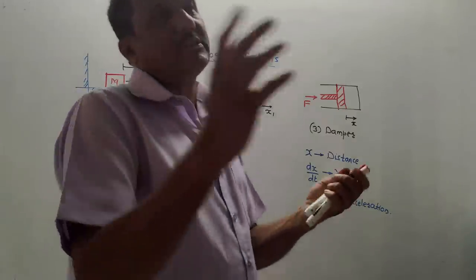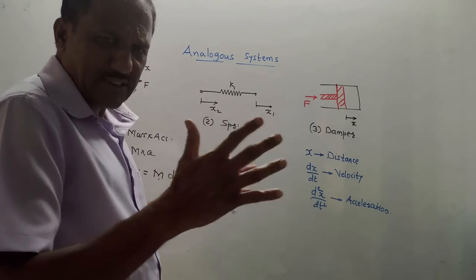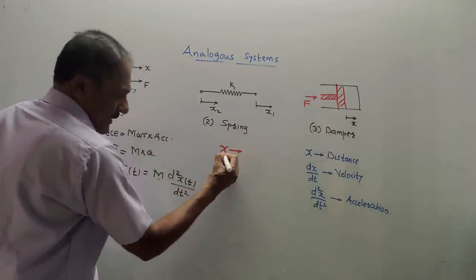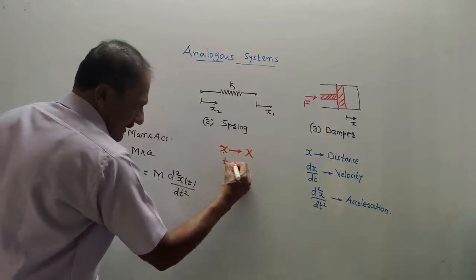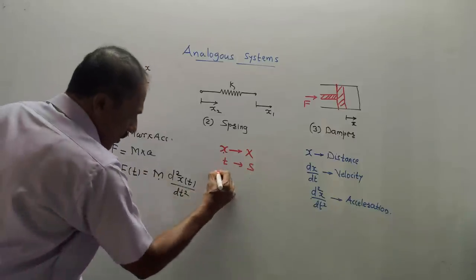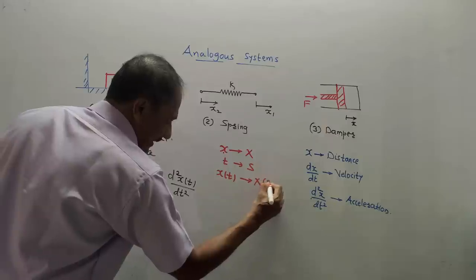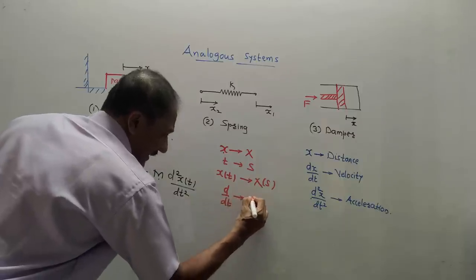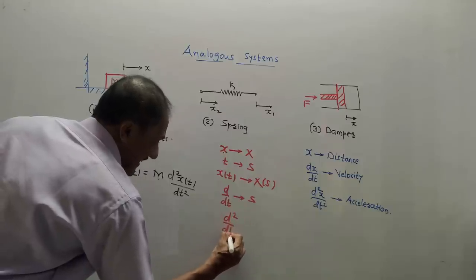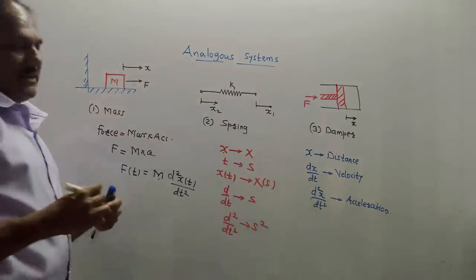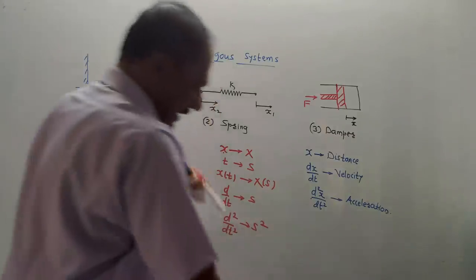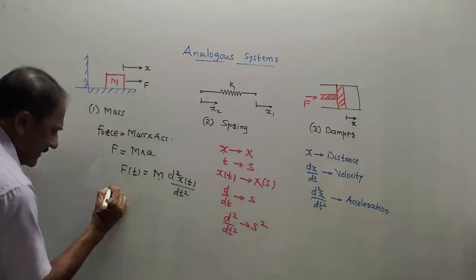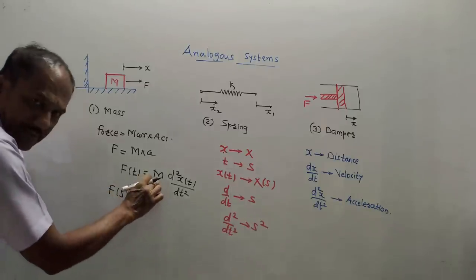Now you need to use some Laplace equations, which are pretty simple. What you need to remember: notation small x becomes capital X, and t is replaced by S. So X(t) in Laplace becomes capital X(S). Second, replace every d/dt by S, and if it is d²/dt², it becomes S². Only a few things are required to convert the equation into Laplace.